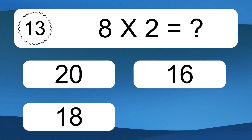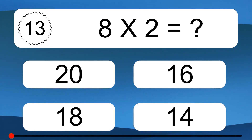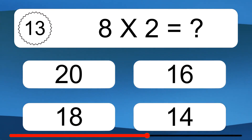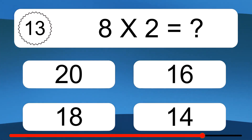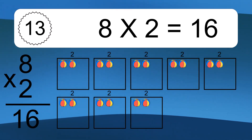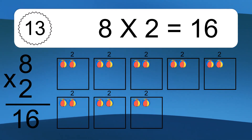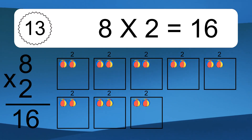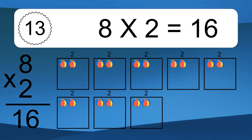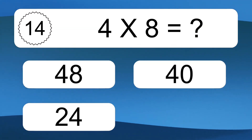8 times 2 equals what? 8 times 2 equals 16. We have 8 boxes, and each box has 2 colorful balls inside. If you count all the balls in all the boxes together, you will have 8 times 2 balls. This equals 16 balls.